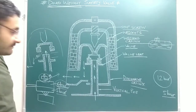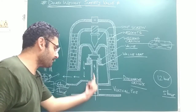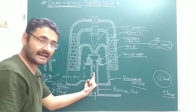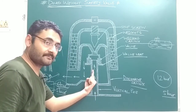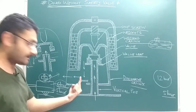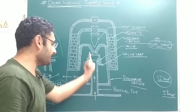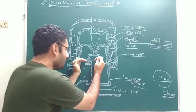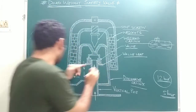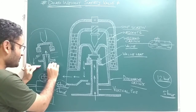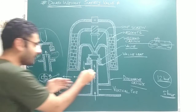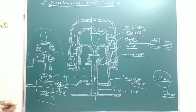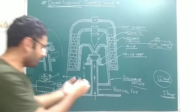Now for the working principle: when steam enters the vertical pipe from the boiler, if the pressure of this steam is more than the working pressure — suppose the steam pressure is 12 bar and the working pressure is 5 bar — then both valves will be lifted from the valve seat. A passage is created, and the extra pressurized steam is rejected into the atmosphere through the discharge casing.